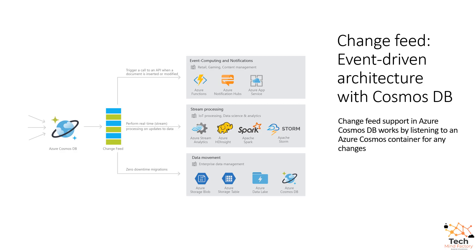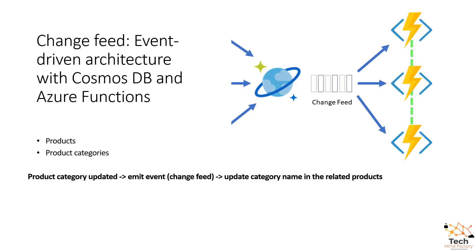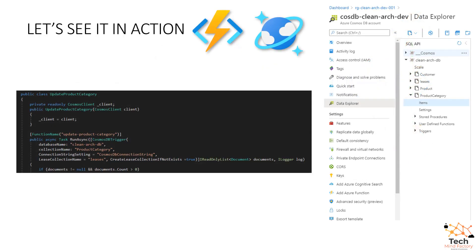We can also move data from one container to another — for instance, move a file from one container on Azure Storage to a different container on Azure Blob Storage. Specifically in this video, we are going to talk about how to use Azure Cosmos DB Change Feed together with Azure Functions. In our scenario, we have a product category container, and once the data is changed — once a product category is updated — an event will be emitted in the change feed, and then we will update that category name in the related products.